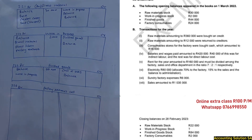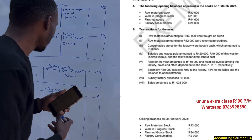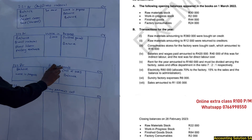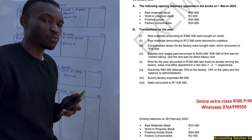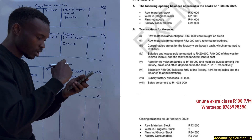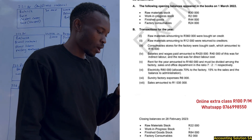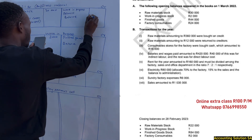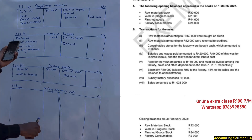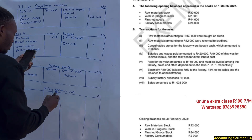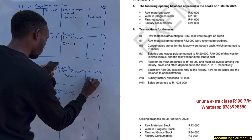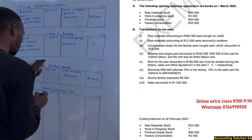We can only complete the work in progress account once we have completed factory overheads, because the balance we get here comes from the total of factory overheads. The closing balance on 28 February: direct material is 22,000, work in progress has no balance, and finished goods has a closing balance of 84,000.